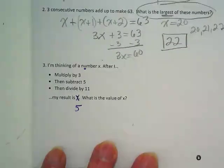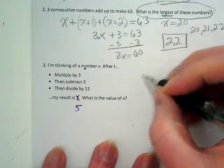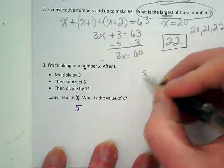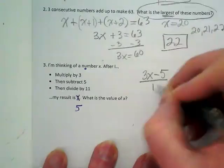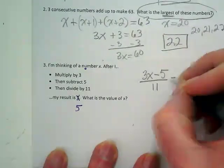So for this one, I'm thinking of a number x. After I multiply by 3 and subtract 5 and divide by 11, it equals 5.